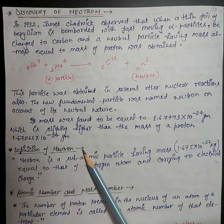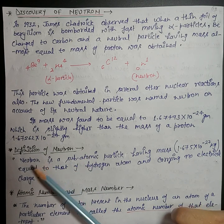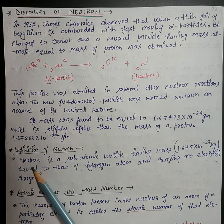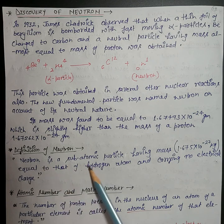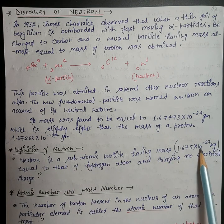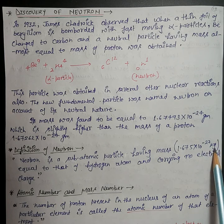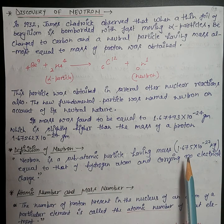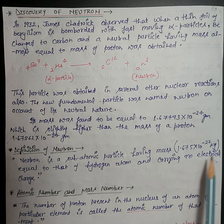Now, definition of neutron: like electron and proton, neutron is also a subatomic particle and a fundamental particle. Neutron is a subatomic particle having mass 1.675 × 10⁻²⁷ kilogram, equal to that of a hydrogen atom, and carrying no electrical charge.